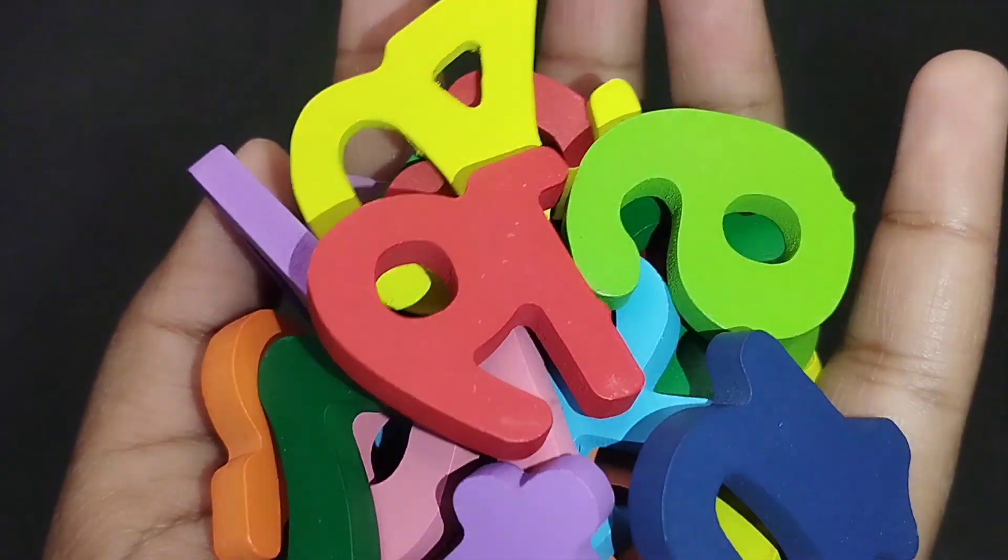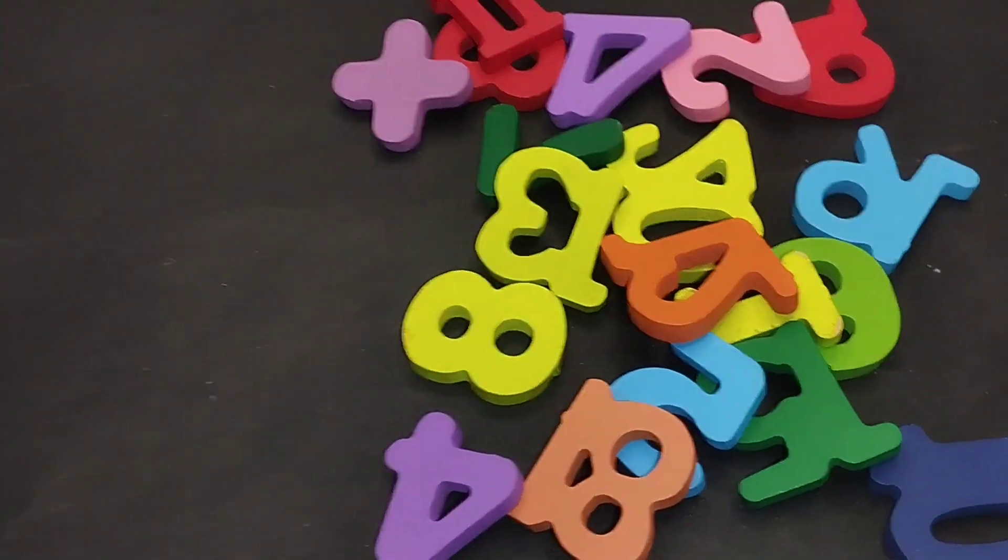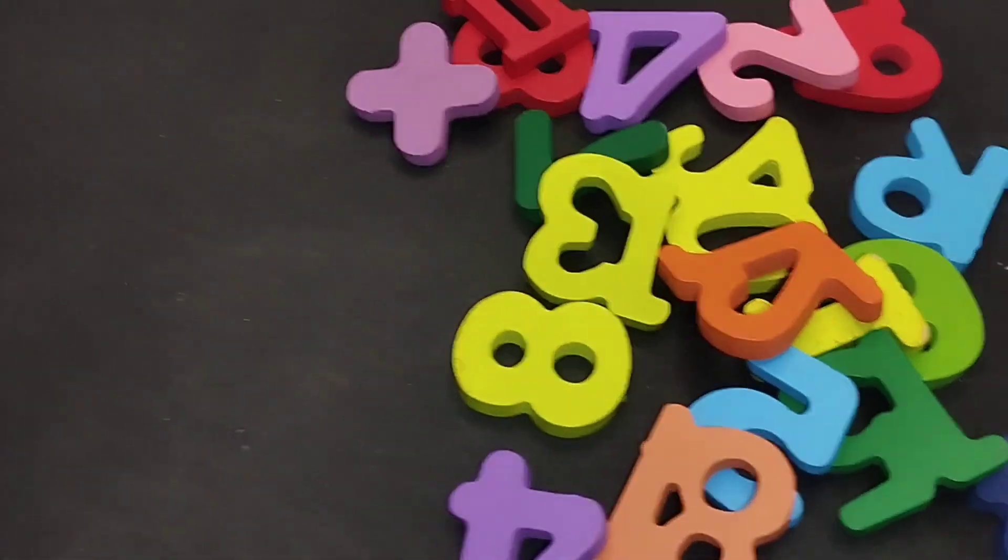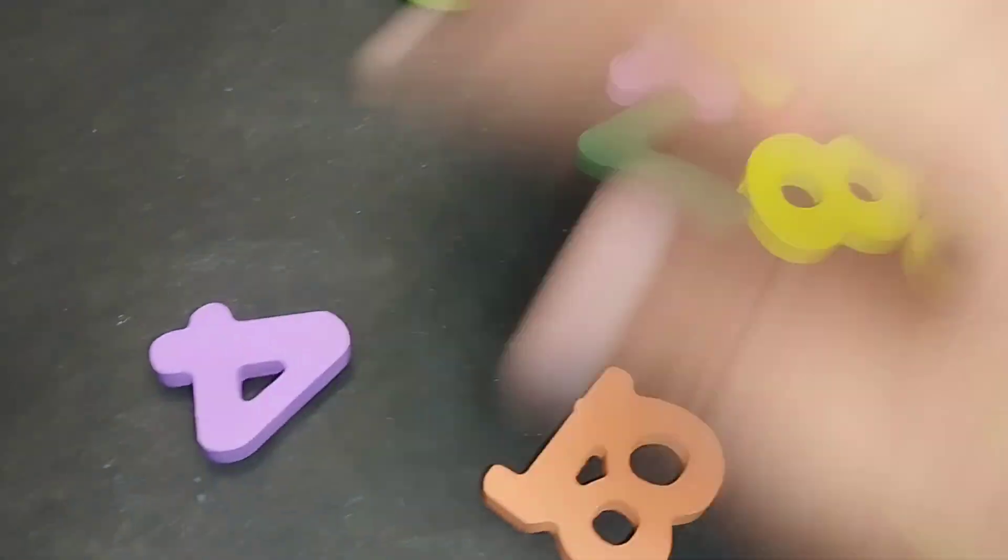Today we have a video number box. We have video numbers 1 to 10. Let's learn clear names one by one. Are you ready kids? Let's start.